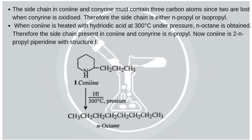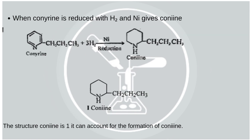Conine is therefore 2-n-propyl piperidine, with structure 1. When conorine is reduced using hydrogen and nickel, it gives conine. This confirms that the structure of conine as 2-n-propyl piperidine can account for the formation as described above.